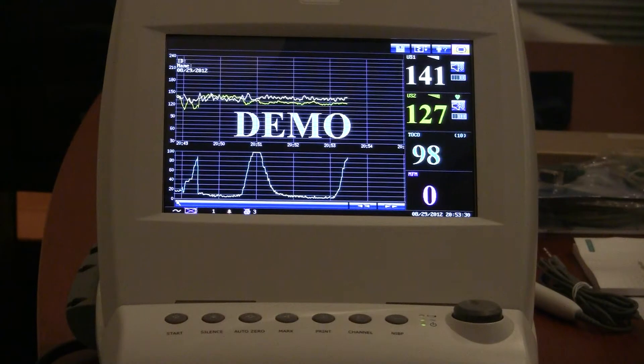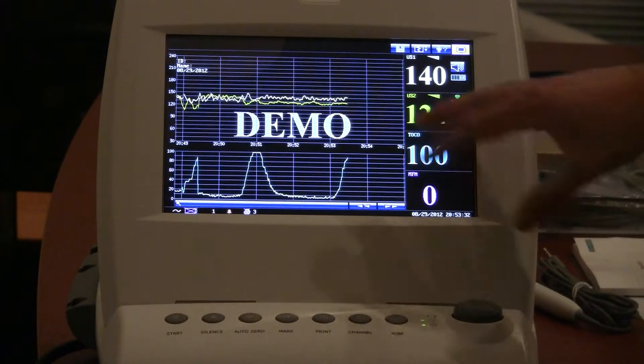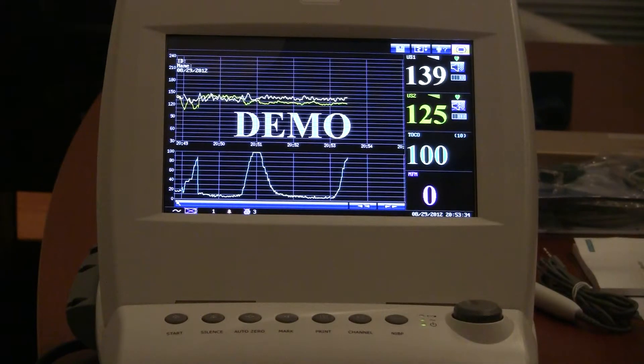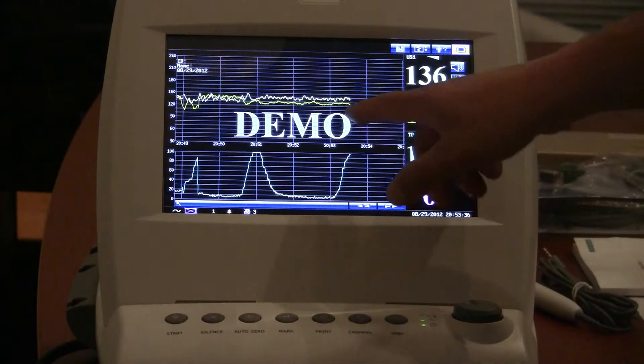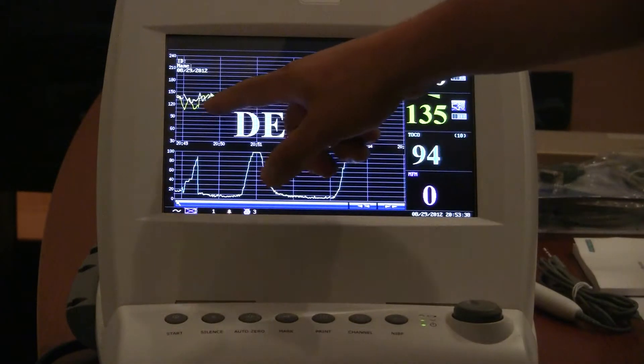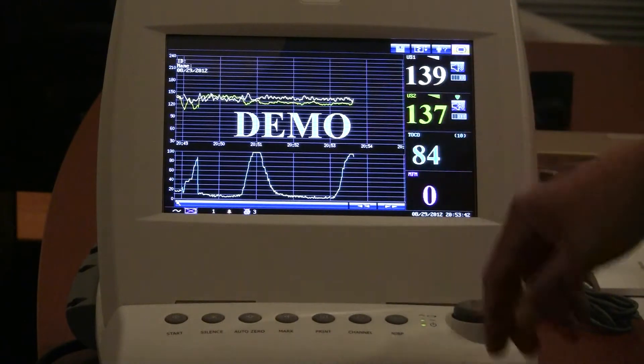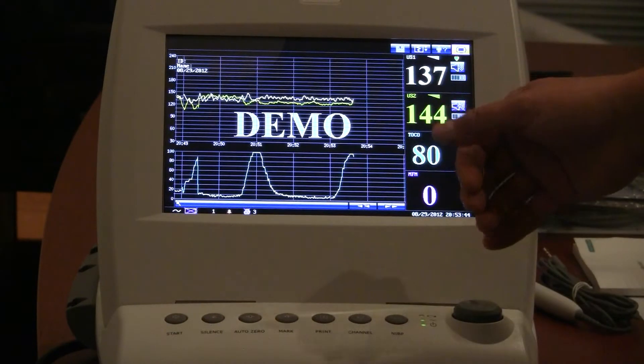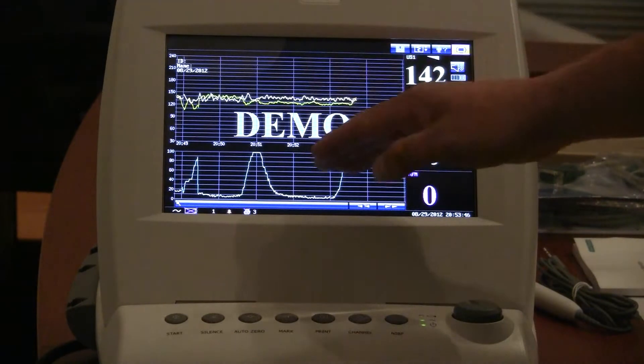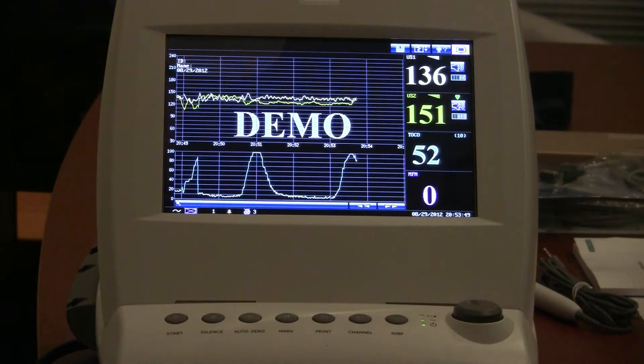There's a couple different ways that you can configure this unit based upon user preference. Right now we've got it set up where the tracings for fetal heart rate one or baby one and baby two will actually overlap. You can actually set this to offset it as well so that one will be lower than the other one. Again, that's a user preference. I find that most practitioners would like them to overlap.